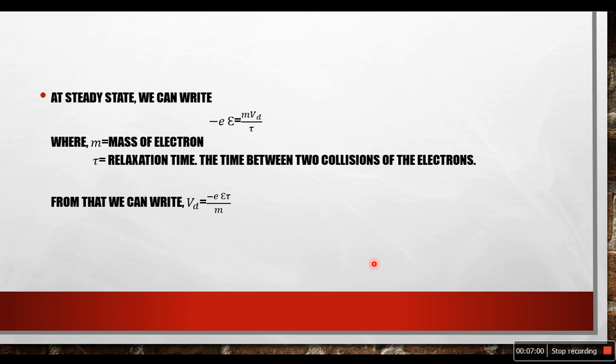At steady state, the force which was introduced by the applied electric field will be balanced by the drag force due to collision. The drag force is created by the collision of the electrons. The drag force can be written as m Vd by tau, where m is mass of electron, tau is relaxation time, the time between two collisions of the electrons. Here the drift velocity Vd by tau is the acceleration. If we multiply with this mass, we will get the force. From that we can write Vd equals minus E epsilon tau by m.